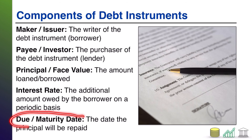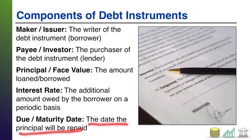And then ultimately you have a due or maturity date. It might be called a due date, might be called a maturity date, again depending on whether you're looking at a note or a bond. Basically, this is just the date on which the principal will actually get paid in full — either paid as a one-time payment, or paid in full if it's a series of payments.